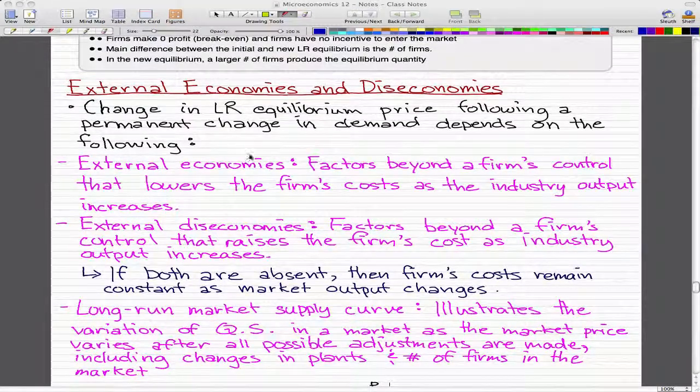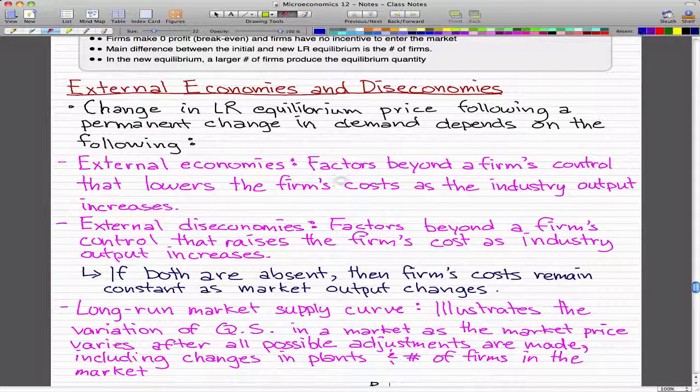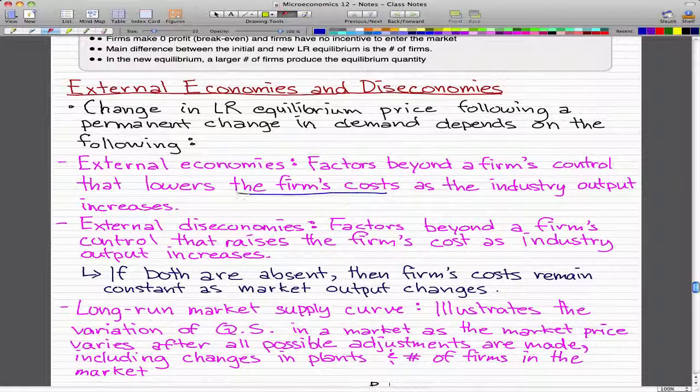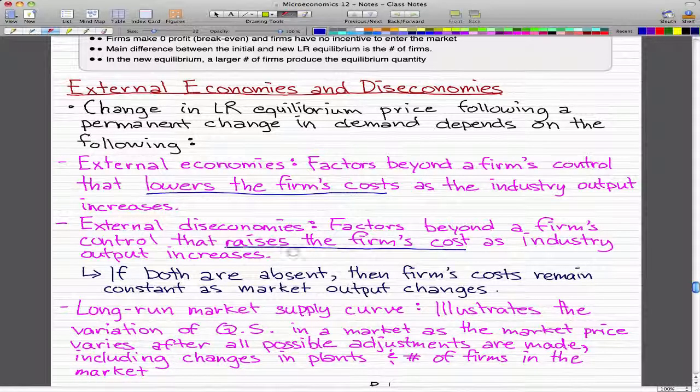External economies, which are factors beyond a firm's control that lowers the firm's cost as the industry output increases, and external diseconomies, which are factors beyond a firm's control that raises the firm's cost as industry output increases.